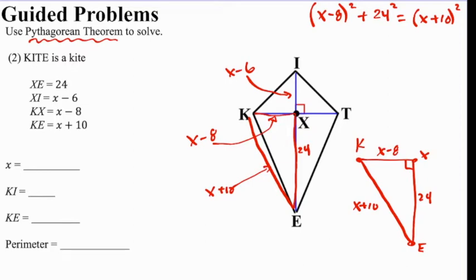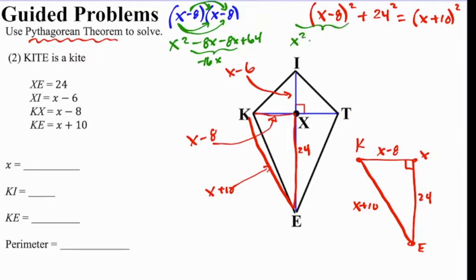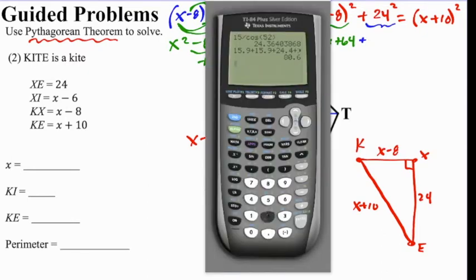Now we have to multiply x minus 8 squared. You would write that two times, and now you would multiply it out. x times x is x squared. x times minus 8 is minus 8x. And then I would take this minus 8 and multiply it by x, so I get another minus 8x. And I would take the minus 8 and multiply it by minus 8, which is a positive 64. We can combine these two minus 8s to be a negative 16x. So that means that this x minus 8 squared now becomes x squared minus 16x plus 64. Now we're going to add to that 24 squared. Let's square it. Enter. It's 576.